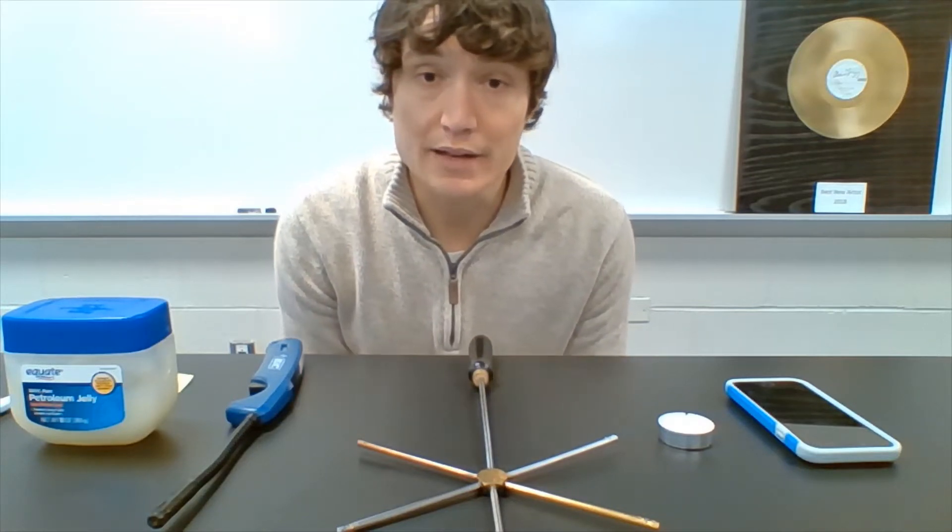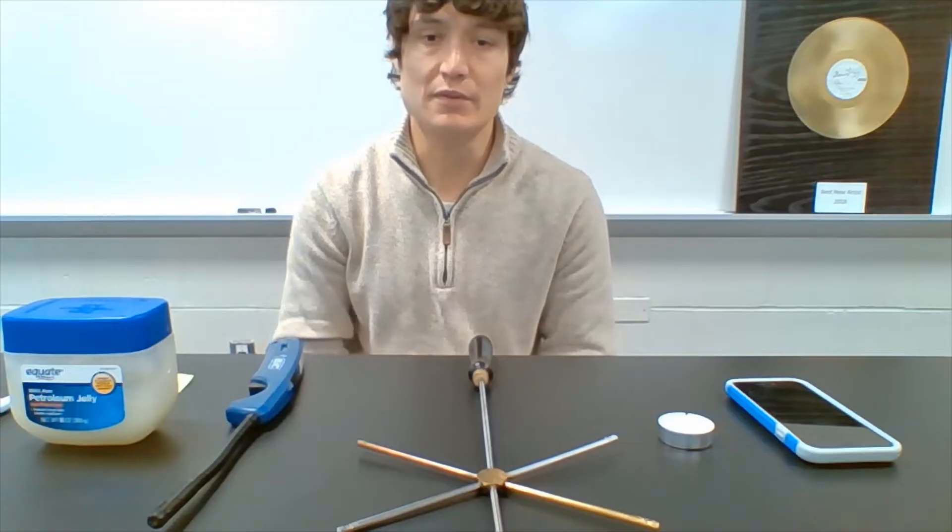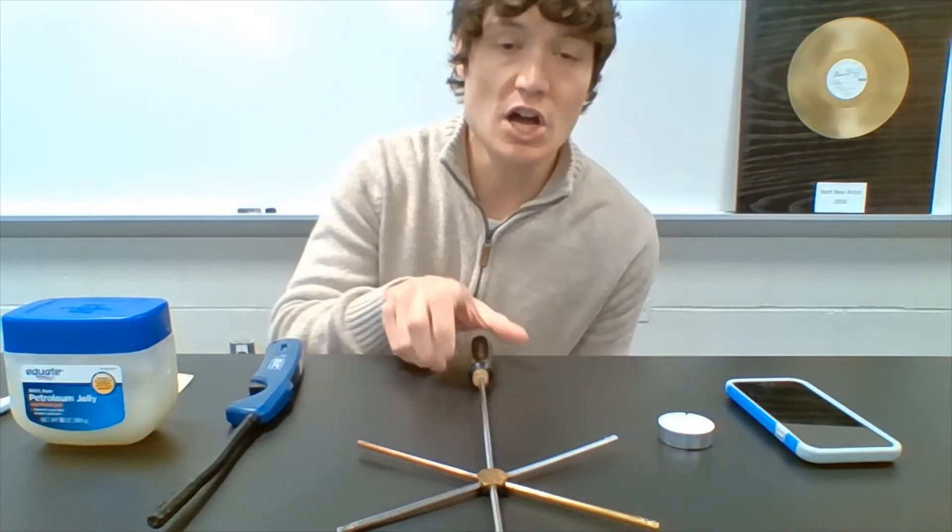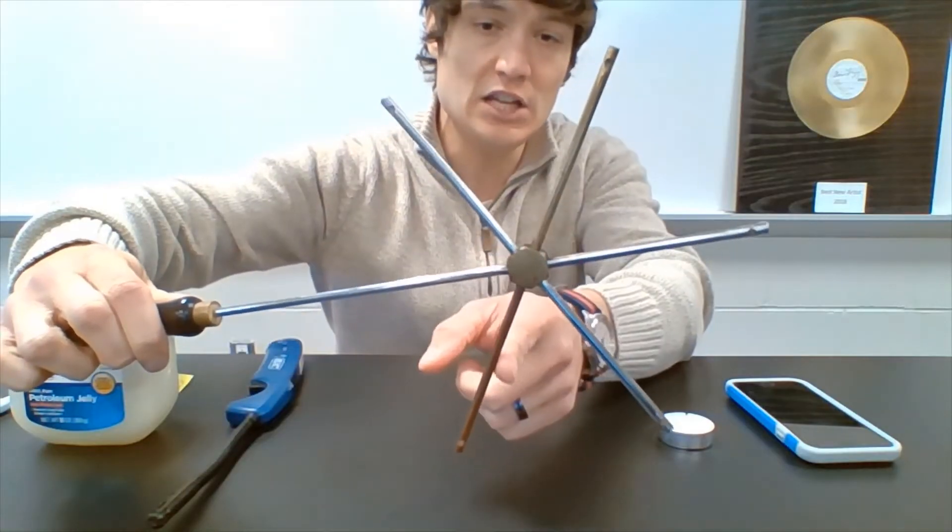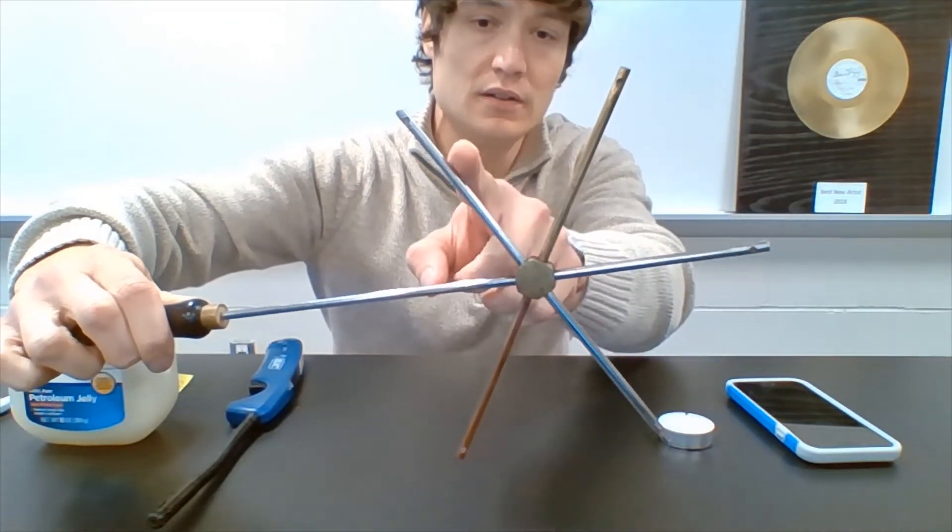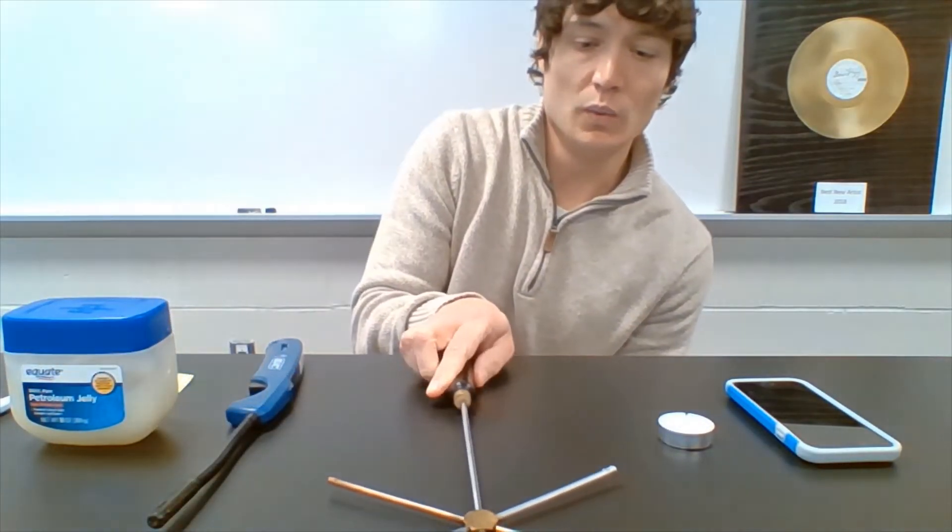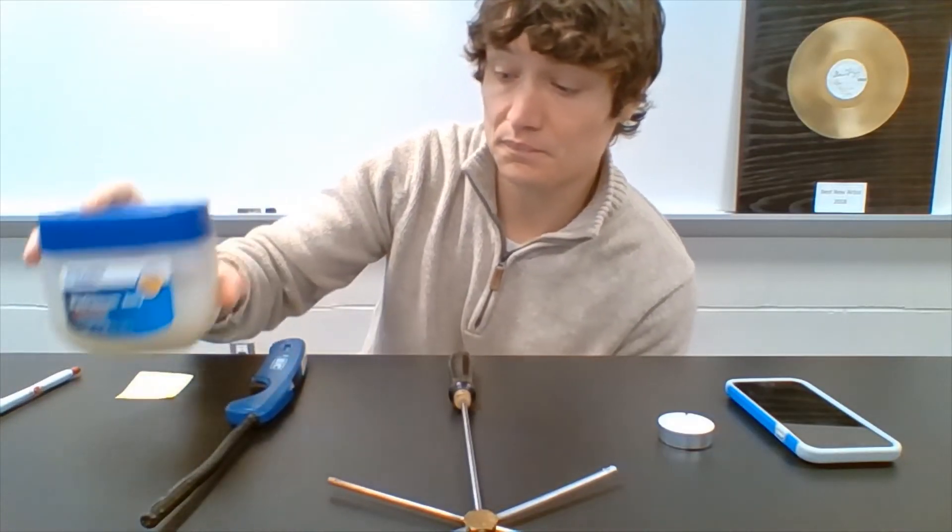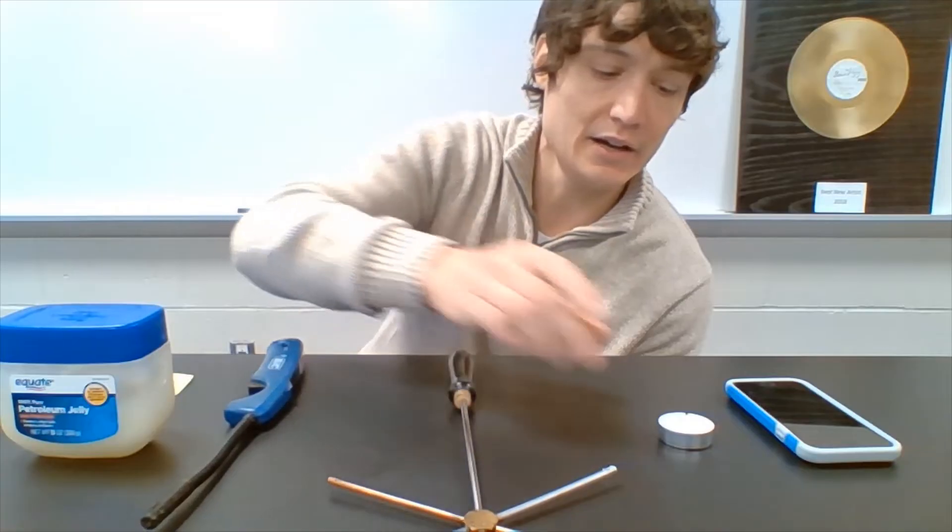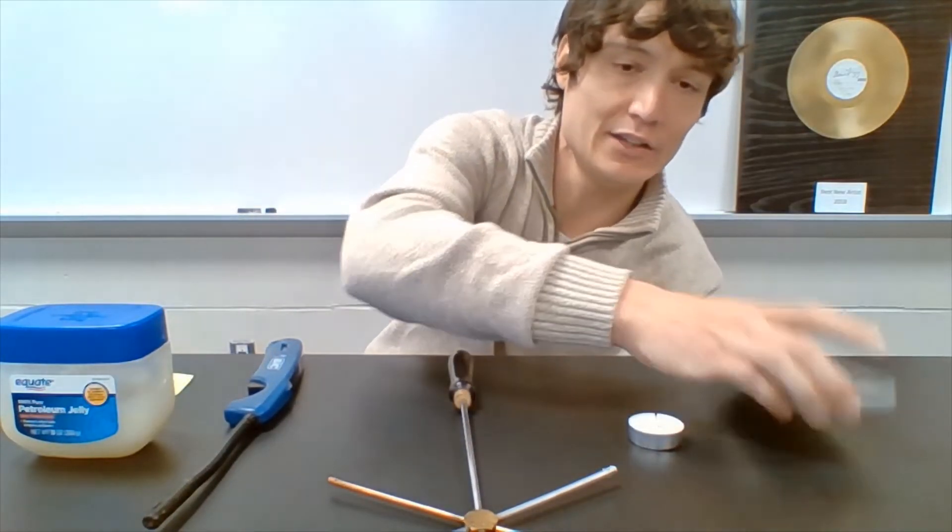And how are we going to do that? Very simple experiment for you today. We will be using a conduction star, which has each of those metals on each appendage here. We will be using some Vaseline, which has a nice low melting point. Obviously we need a lighter and a tea candle, as well as a timer.